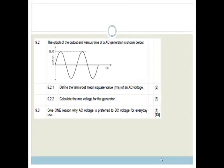In this lesson, we're going to be looking at another section on your electrodynamics and also the photoelectric effect. So it says a graph of the output of the EMF versus time for an AC generator shown below. So you can see here that we've got a nice alternating current and we've got an EMF there, which says 39.45 volts.